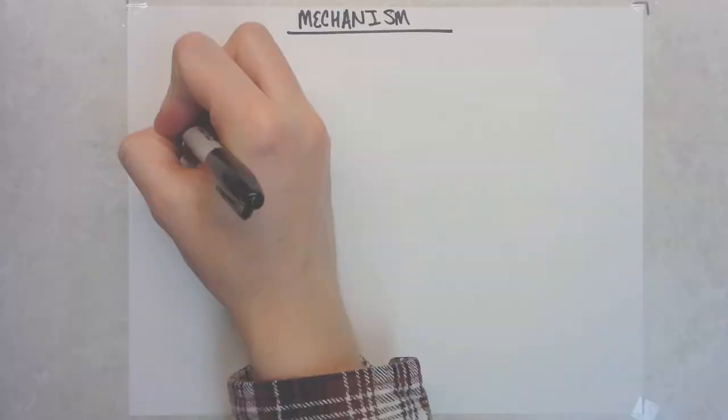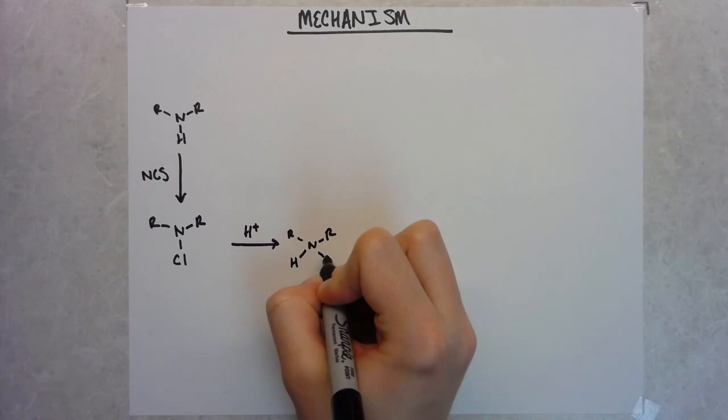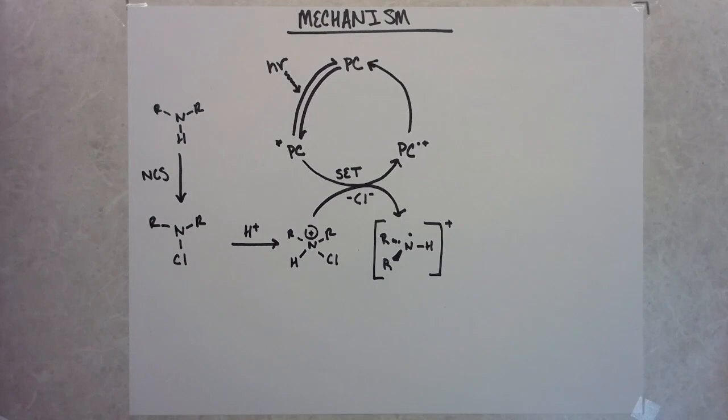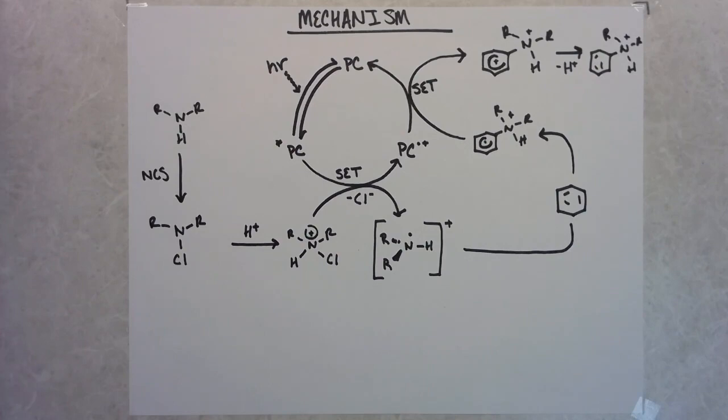So in this paper, they start with their secondary amine. And with NCS, they generate the N-chloroamine, which then upon protonation, you get this protonated chloroamine. So then your photocatalyst reduces off chloride to leave your imidium radical, which this is then a highly electrophilic species. And so your unfunctionalized aryl can do a radical addition to form a stabilized cyclohexal hexadienal type radical, which then your photocatalyst can oxidize. And upon deprotonation, you are left with the product.